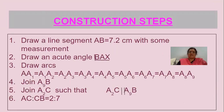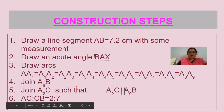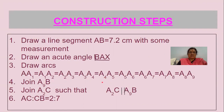The construction steps are easy to write — whatever we have done in the construction, the same thing we write. We have taken line segment AB of 7.2 centimeters, drawn an acute angle BAX, and marked nine equal line segments on ray AX such that AA1 equals A1A2 and so on up to A8A9. Then we joined A9B and drew a parallel line A2C to A9B, finally dividing the line segment 7.2 centimeters in the ratio 2 is to 7.